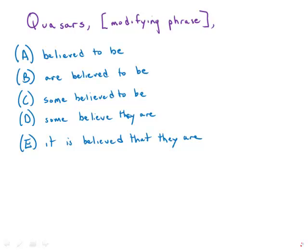So, in this sentence about quasars, we get quasars, which is the noun, the subject of the sentence, and then it's followed by this long modifying phrase set off by commas.